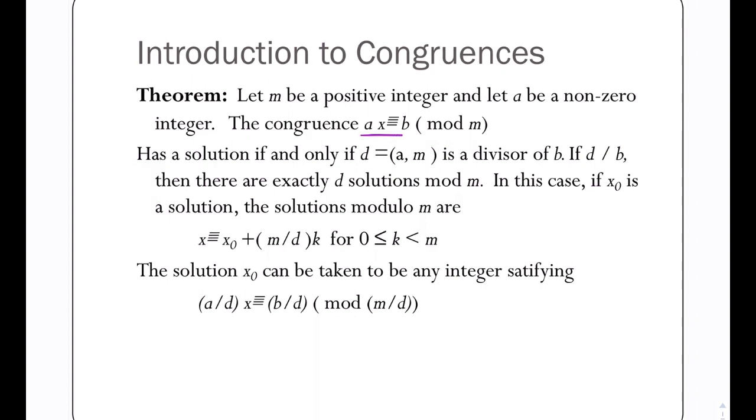So we're trying to solve the congruence Ax congruent to b mod m. All the examples we've done so far in the previous video had unique solutions, but it's possible that we have multiple solutions, and it's also possible that we have no solutions.